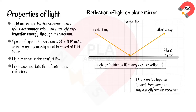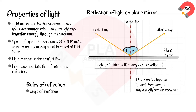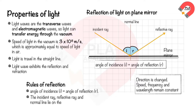The normal is a line at right angles to the mirror. The angle of incidence is the angle between the incident ray and the normal. The angle of reflection is the angle between the reflected ray and the normal. Therefore, the rule of reflection: angle of incidence, i, equals angle of reflection, r. The incident ray, reflected ray, and normal line lie on the same plane.